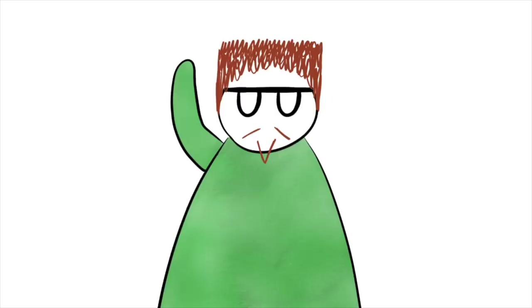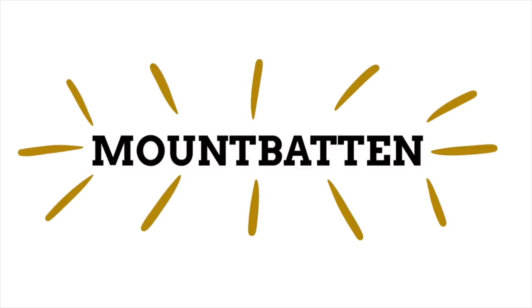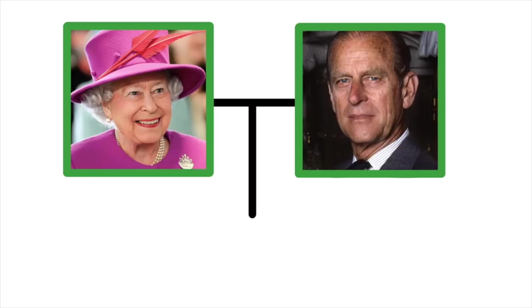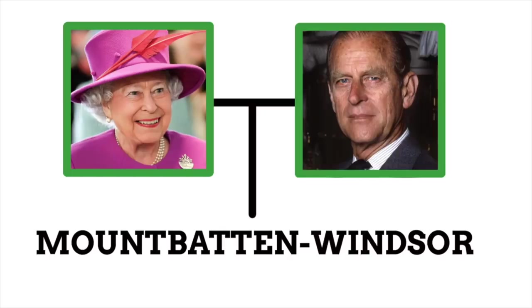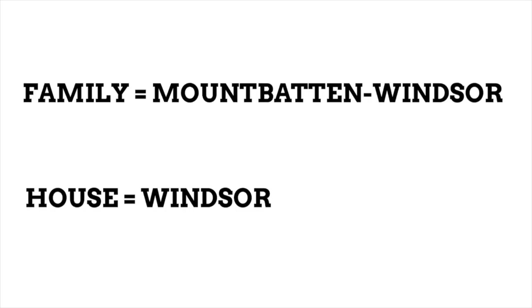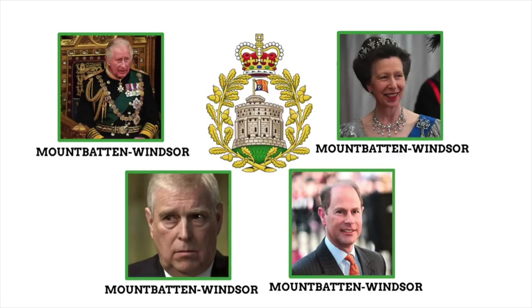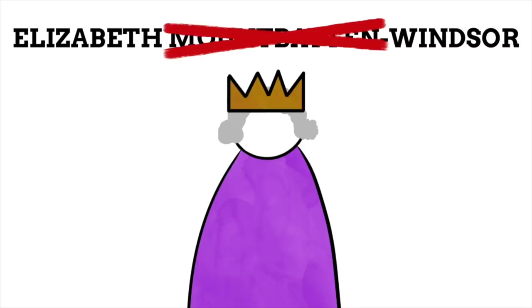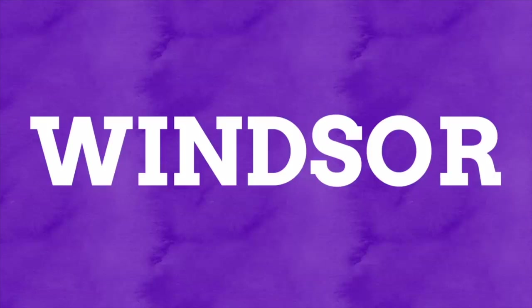Elizabeth didn't adopt the name Mountbatten for herself, however — breaking with tradition. Upon her ascension to the throne in 1952, she declared that she and her children shall be styled and known as the House and Family of Windsor. This solidified Windsor as the house name indefinitely, and her descendants are all part of the House of Windsor despite the fact that traditionally they should have been part of their father's House of Mountbatten. In 1960, the queen's Privy Council declared that direct descendants of the Queen and Philip should carry the double-barrelled surname of Mountbatten-Windsor in honor of both of them — though the house name itself remained simply Windsor.